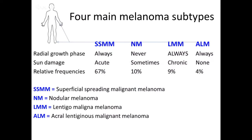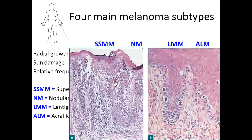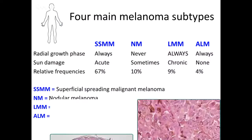Acral lentiginous melanomas obviously occur in the palms, soles, and subungual locations. They also always start with a radial growth phase, and obviously there's no association with sun exposure — these are typically sun-protected sites. You have a mixture between a lentiginous and nested pattern: single-file proliferation of very abnormal melanocytes with a dendritic morphology along the basal layer, and they may also have pagetoid scatter throughout the epidermis and even nest formation.